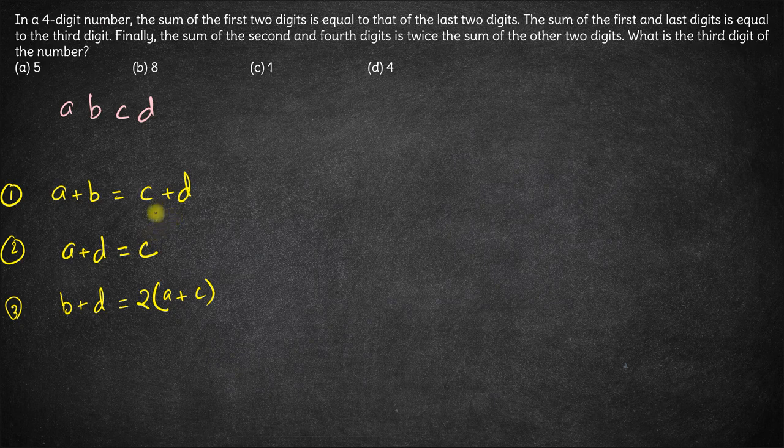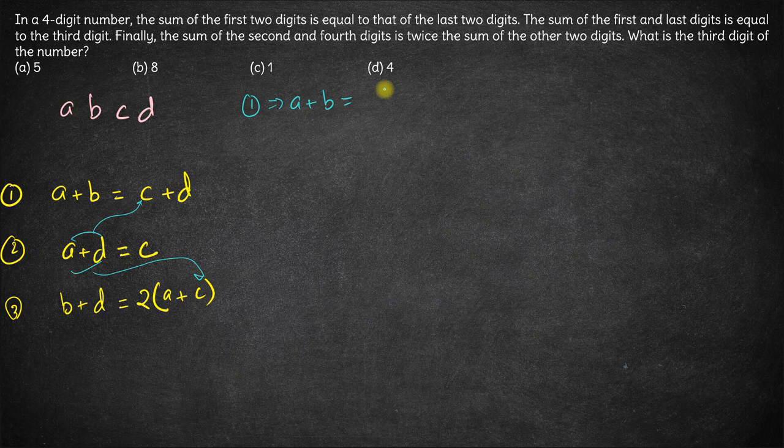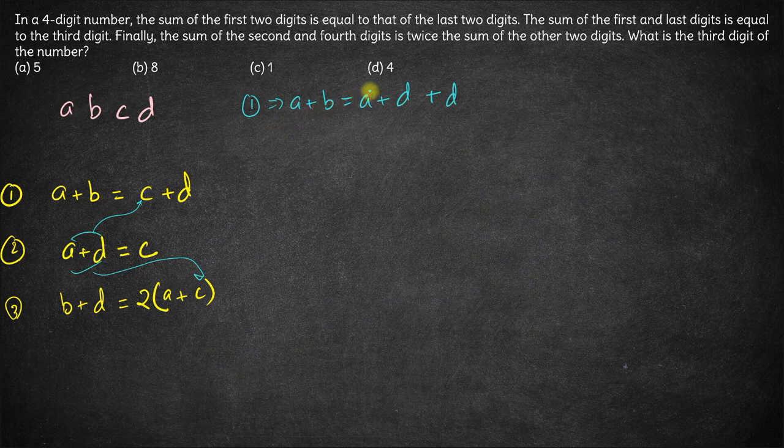So let's do one thing. Let's substitute C with A plus D in both first and third equations. So from the first equation we get A plus B is equal to, instead of C we substitute A plus D, plus D. So A gets cancelled out, B comes out to be 2D.